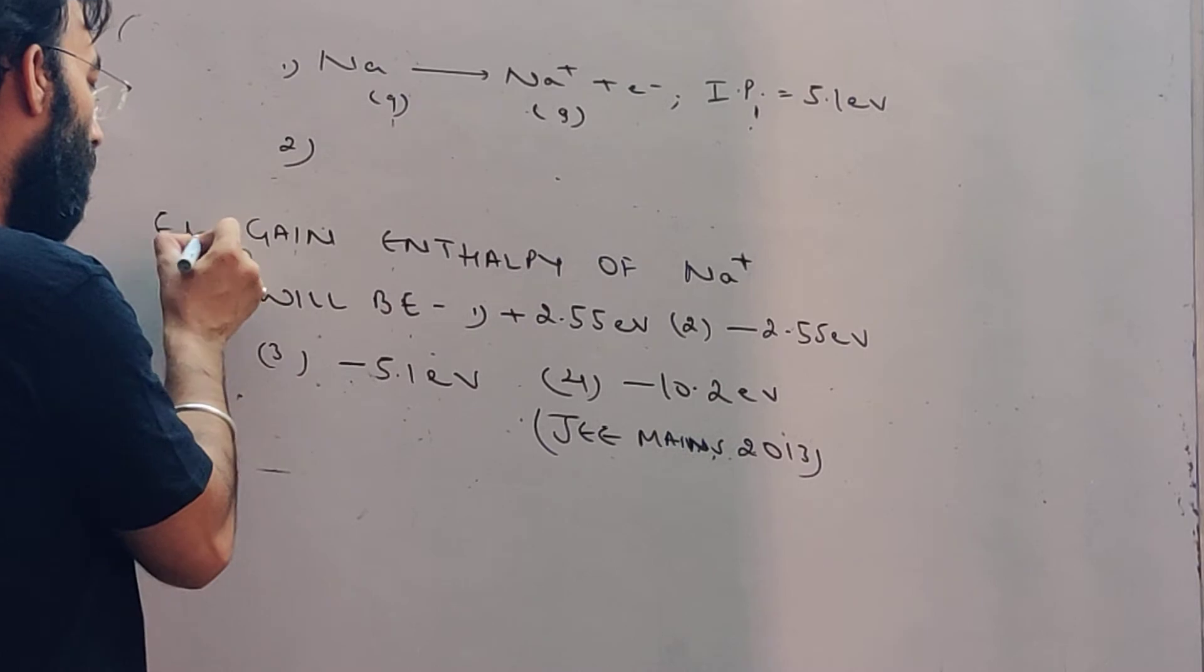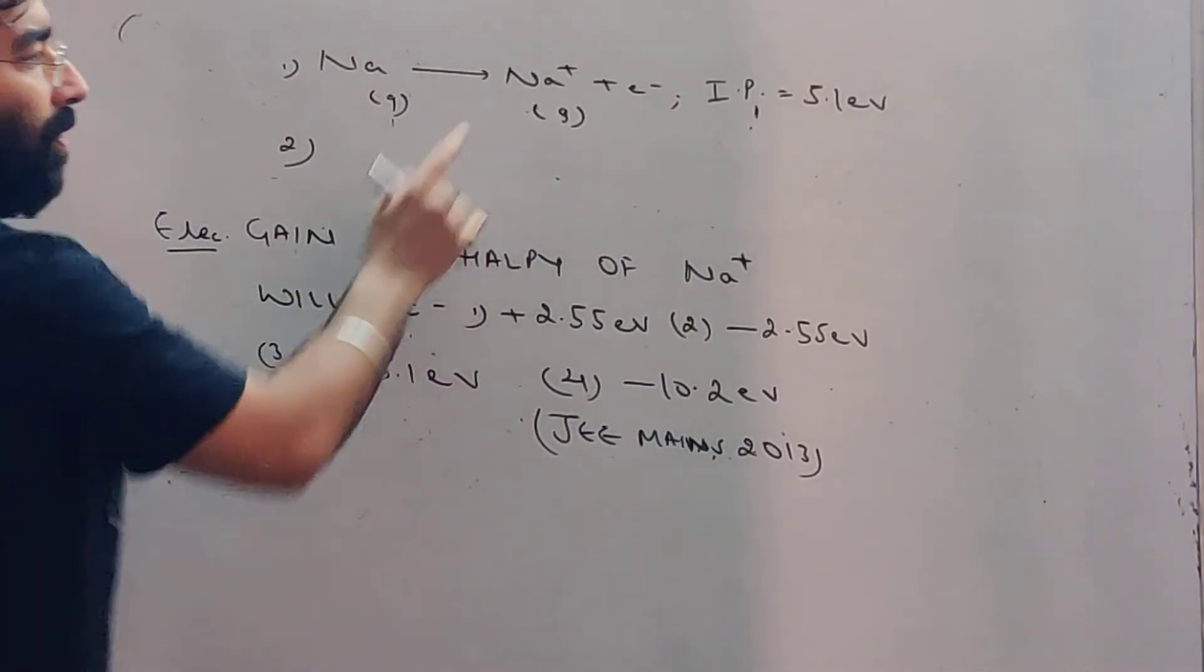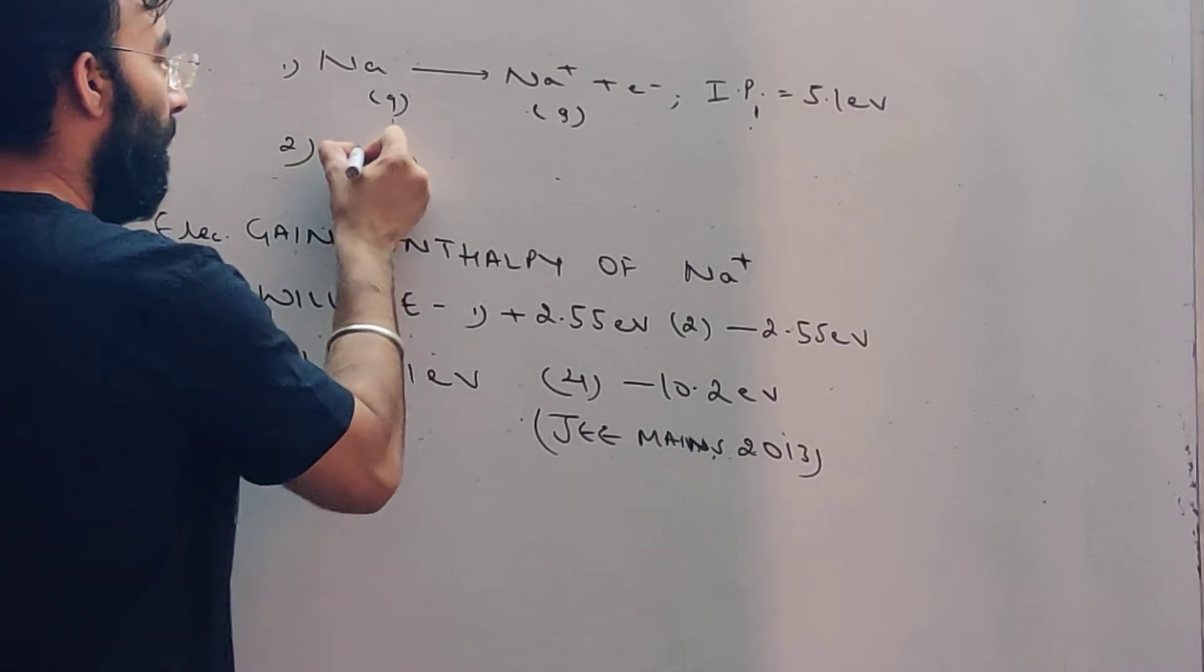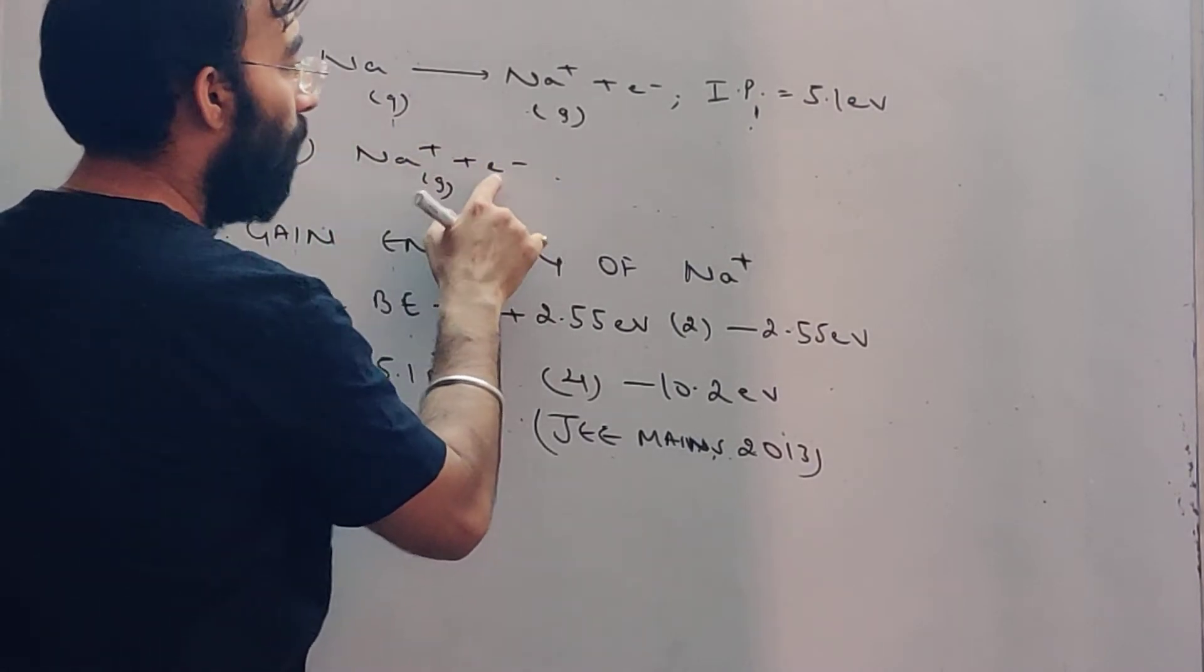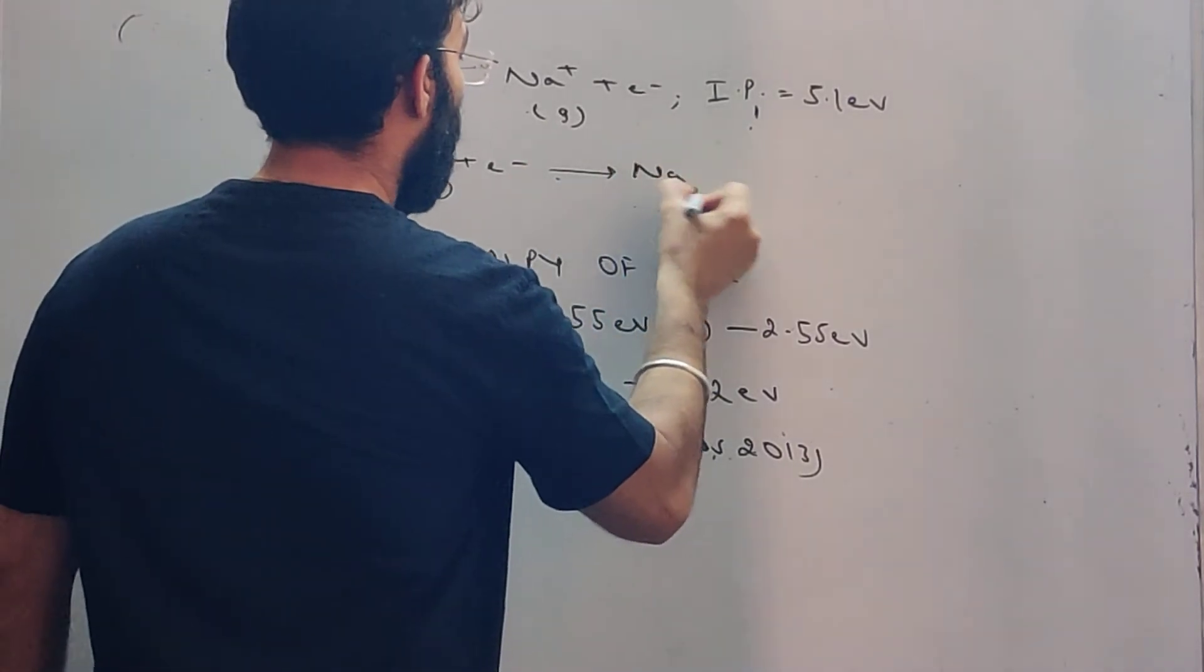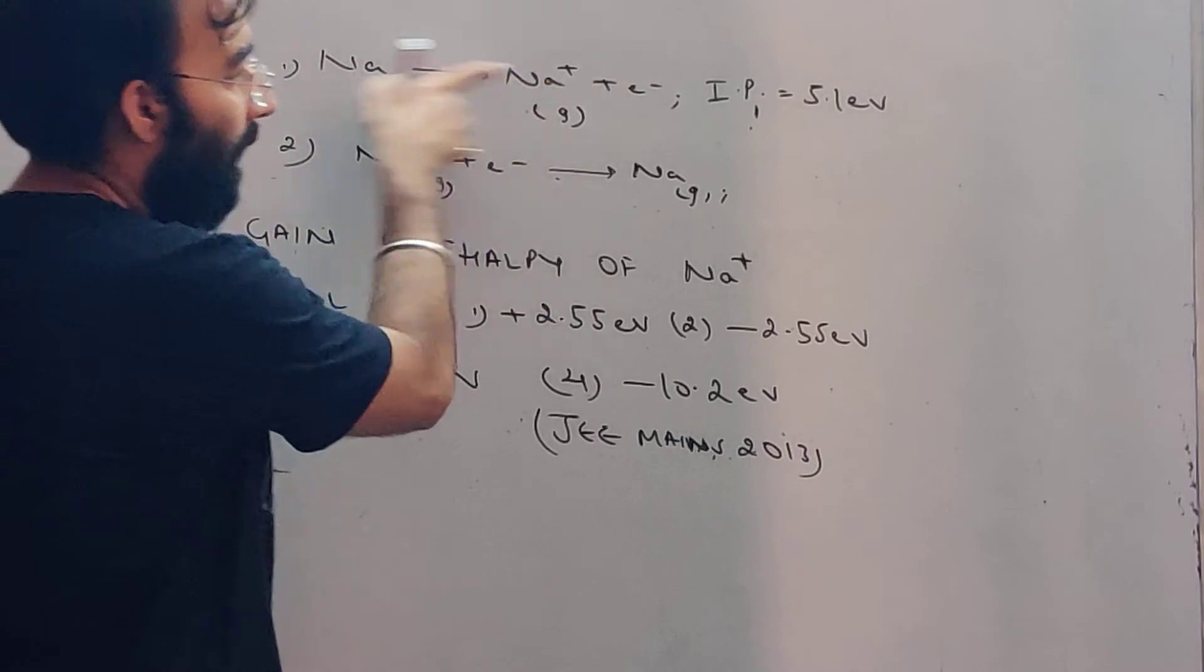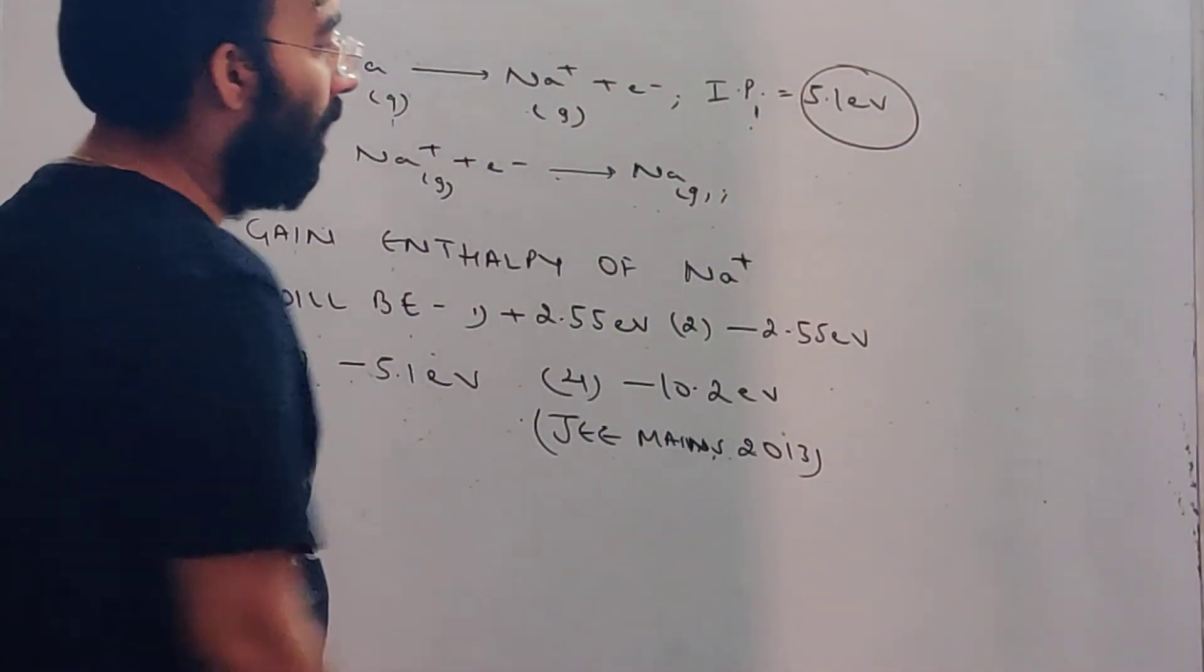Now the electron gain enthalpy of sodium ion. This is an easy question. Suppose if I reverse this equation. So sodium will gain an electron. Yes, sodium in gas state will have this reaction. Your ionization potential detaches 5.1 electron volts.